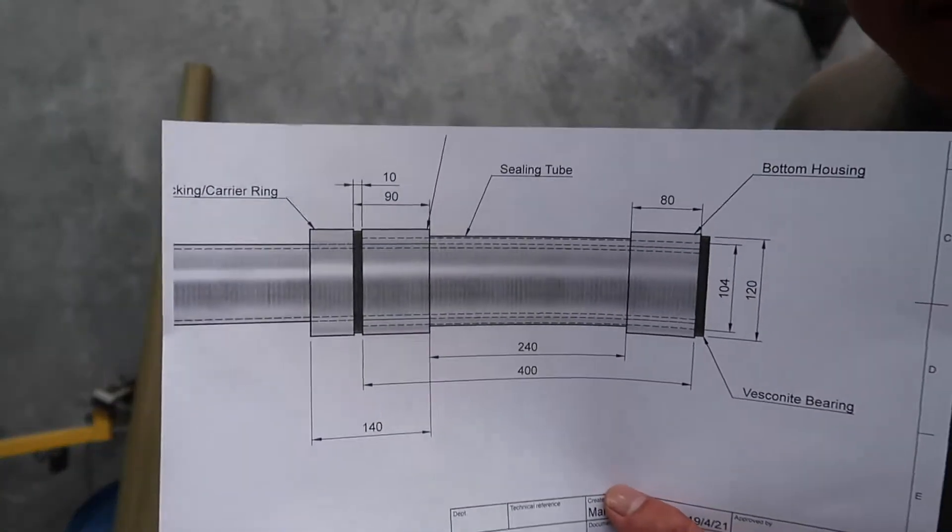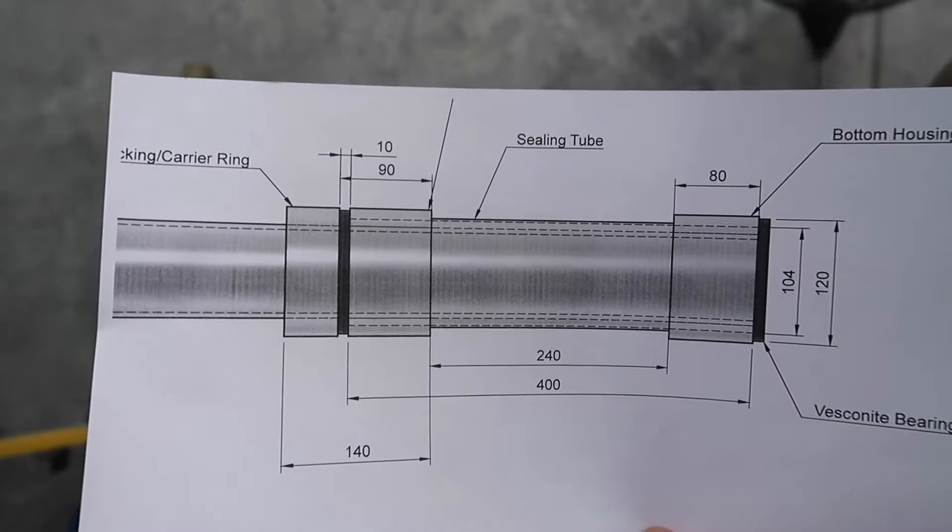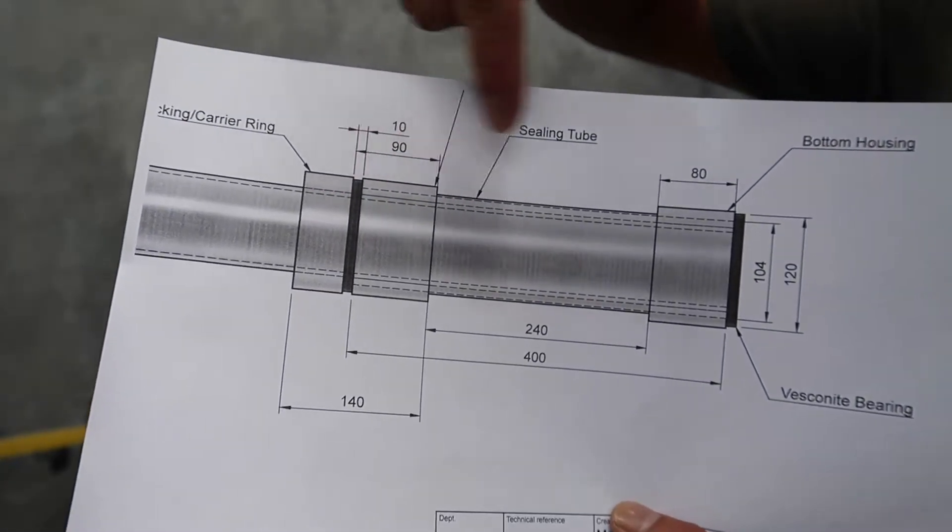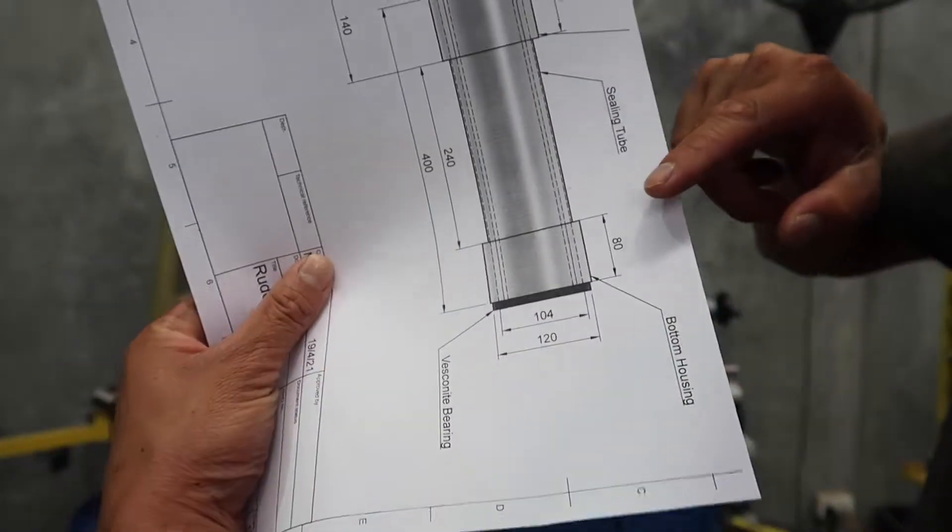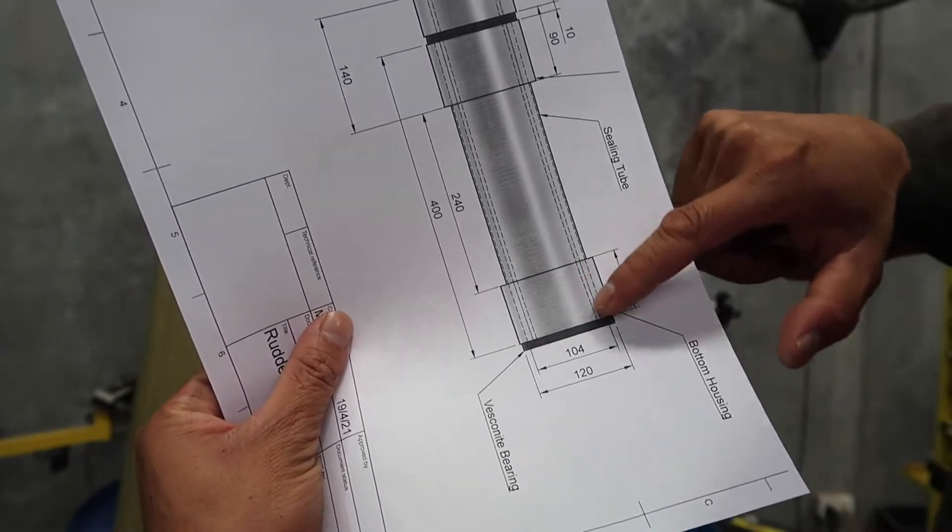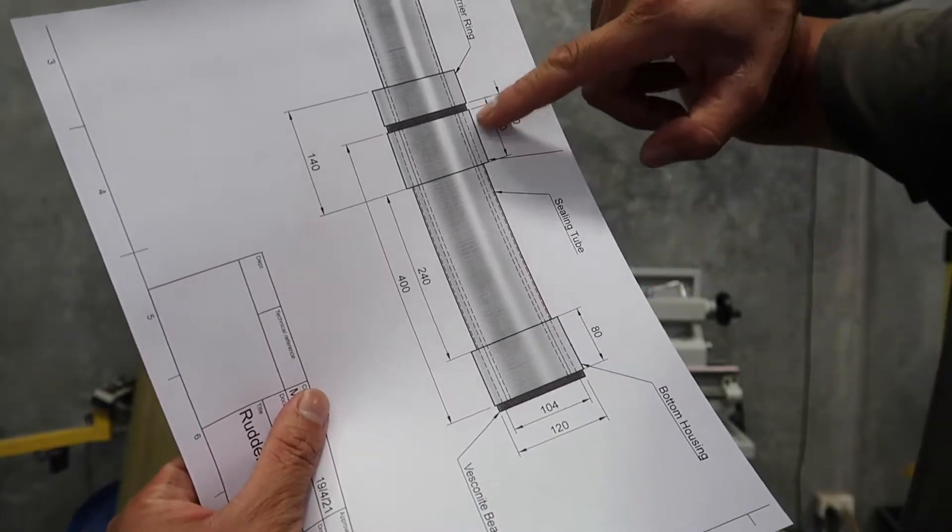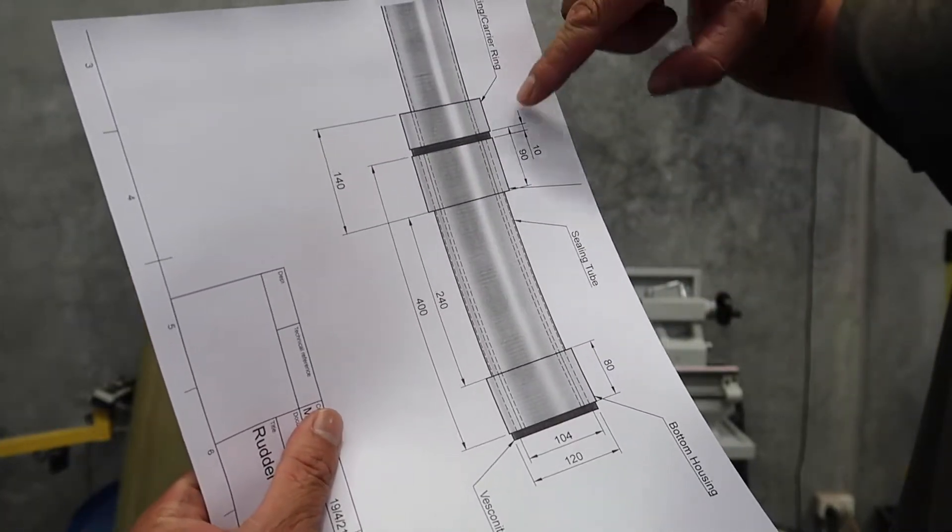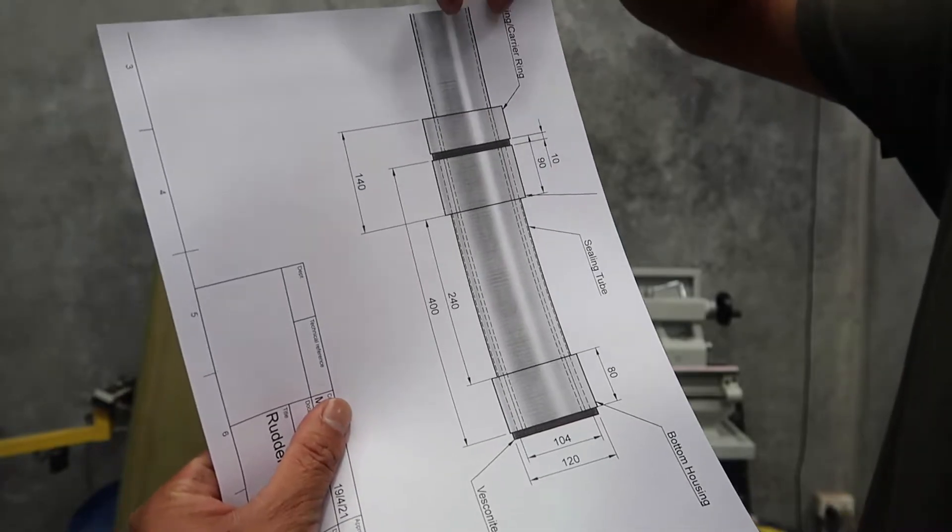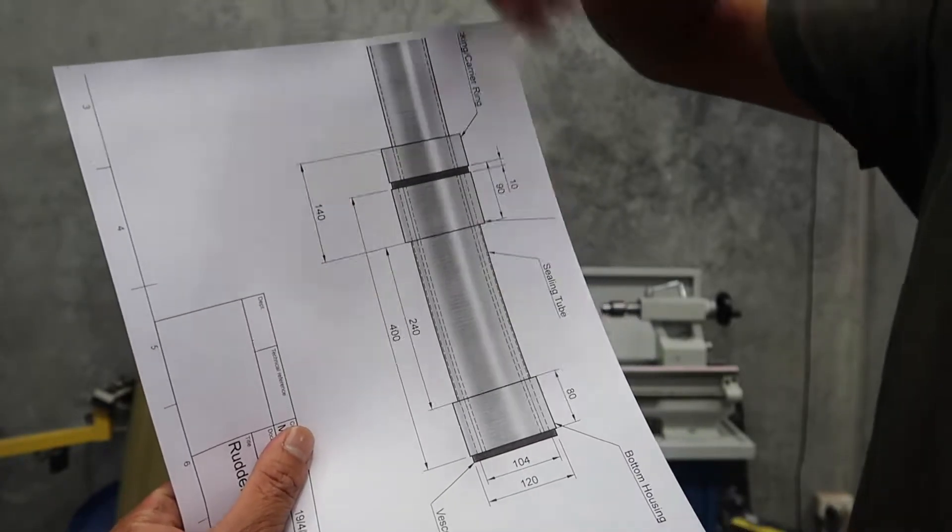So this is what the drawing looks like of the rudder system that we're building. You've got the bottom bit of the bearing. So you've got the housing here. You've got the shaft coming through and you've got the bearings either side. And this is called a locking ring or a thrust ring to hold the shaft from dropping down.